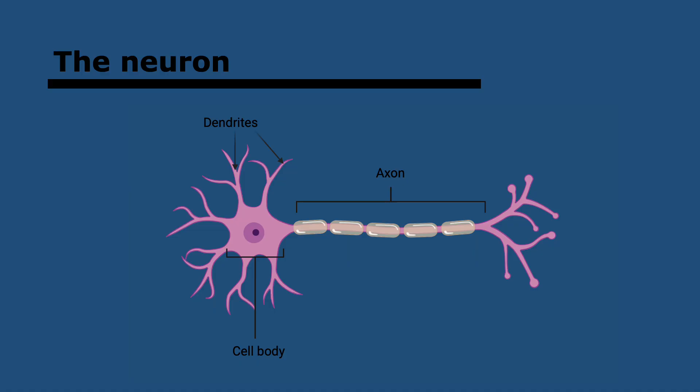There are two body systems that are used for internal communication: the endocrine system and the nervous system. So the nervous system consists of neurons. Neurons transmit nerve impulses which are electrical signals.